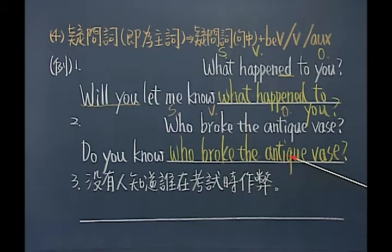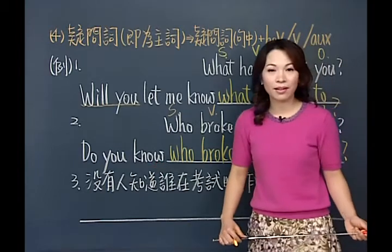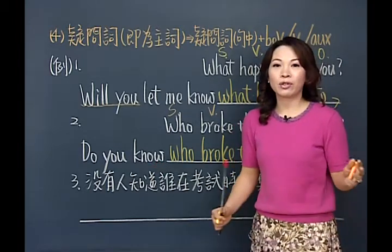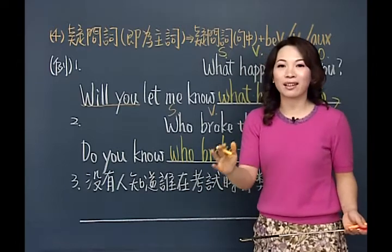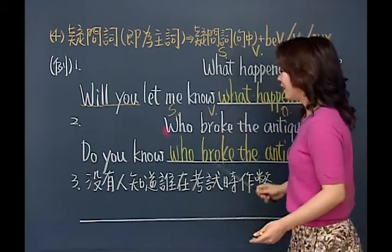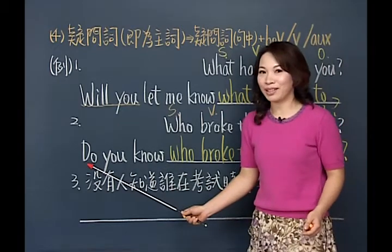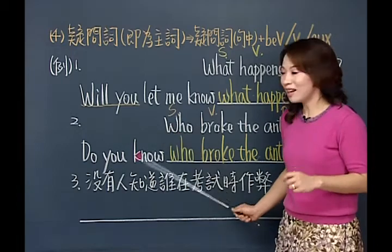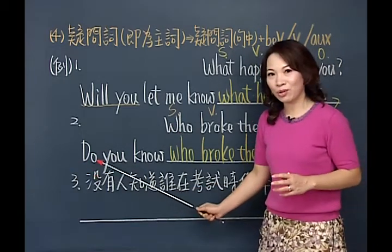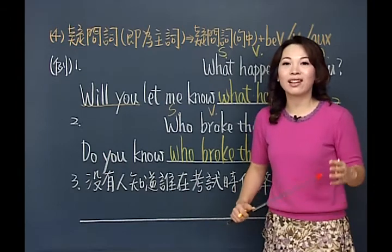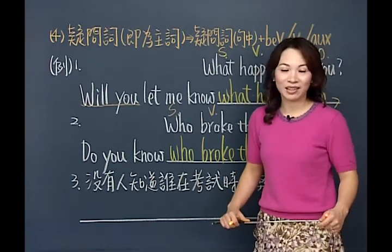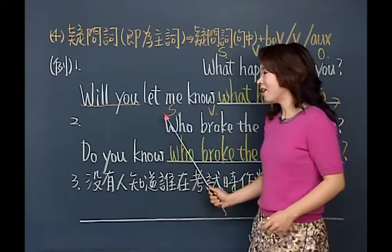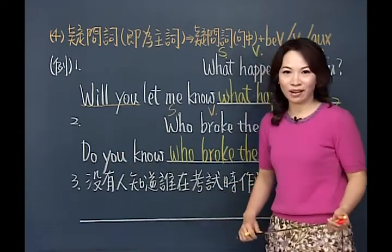在这个句子里面Do you know who broke the antique vase？你知道是谁打破的吗？你可以直接回答：Yes, I do. But I don't want to tell you.（是啊我知道，但是我不想告诉你。）这两种开头的问句是不一样的：who开头你直接回答是谁做了，Do助动词开头的问句要先回答Yes/No。